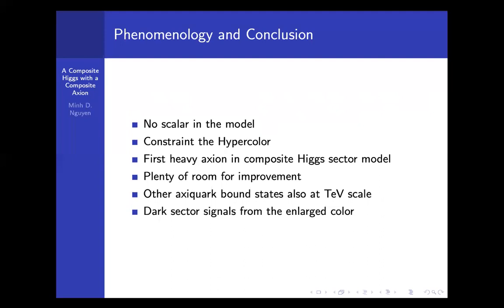Let me conclude my talk. In our model, we successfully incorporate a heavy axion into a composite Higgs model. There's no scalar in the model because everything honors a global symmetry. The gauge symmetry is broken by hyperfermion condensate. This is going to bring some constraint on the hypercolor, but this is a minimal model.